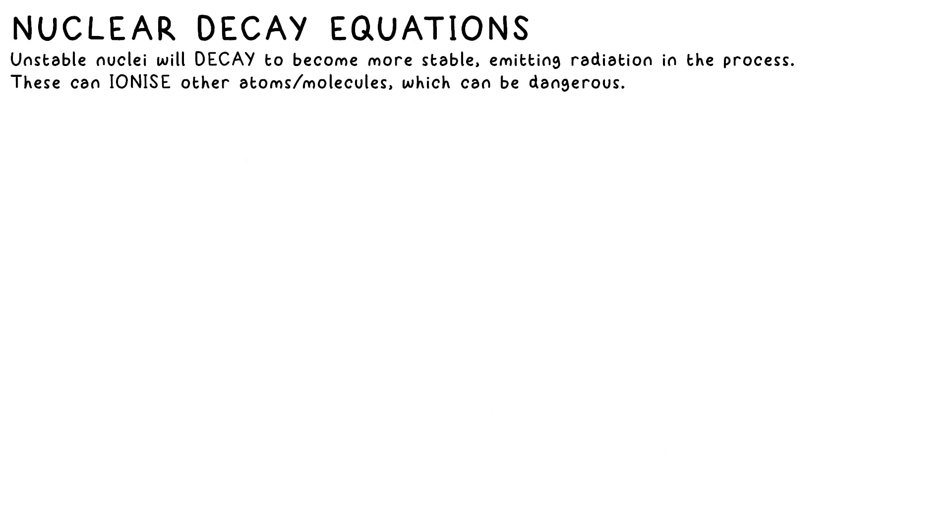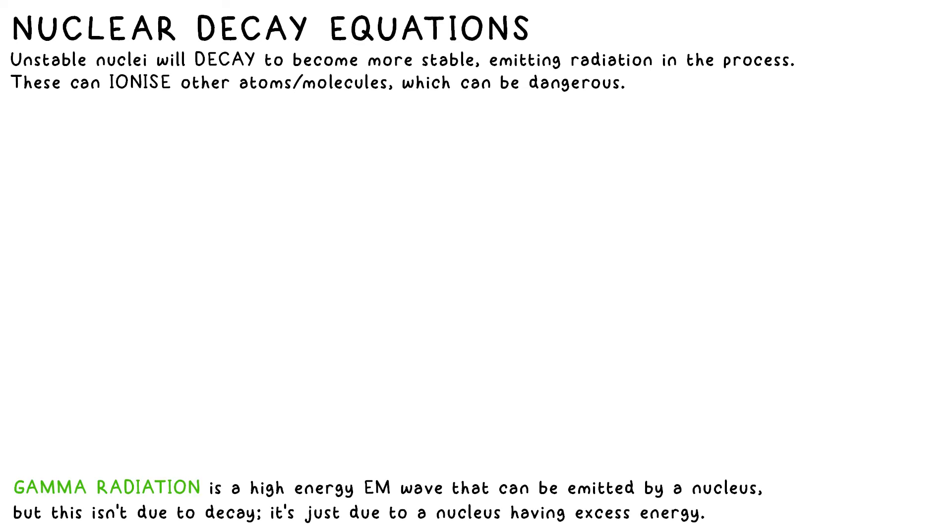The term radiation means any particle or wave that's emitted by something. The electromagnetic spectrum is all radiation, but they're all emitted by electrons, all apart from gamma radiation that is. Gamma radiation is actually emitted by the nucleus of an atom if it has excess energy it's getting rid of. Gamma rays are high energy EM waves.